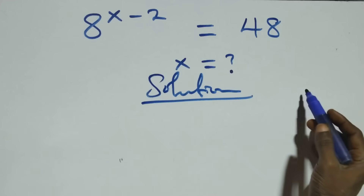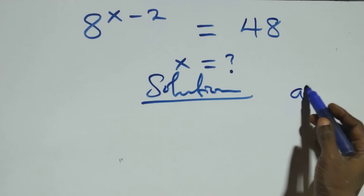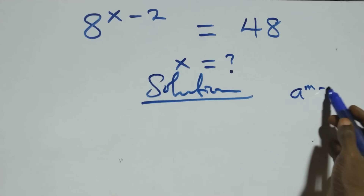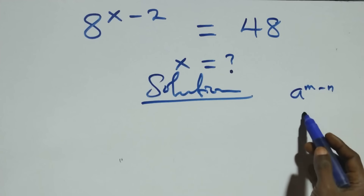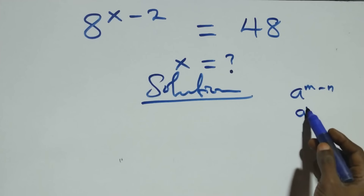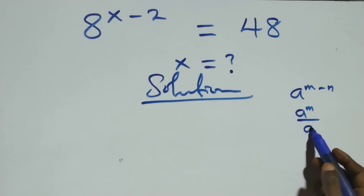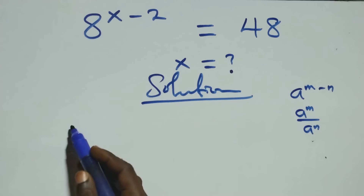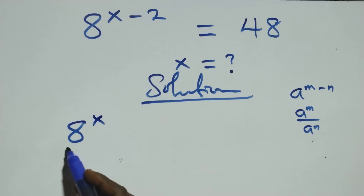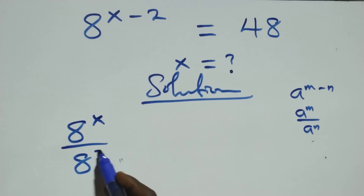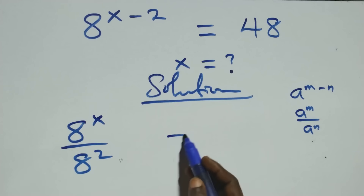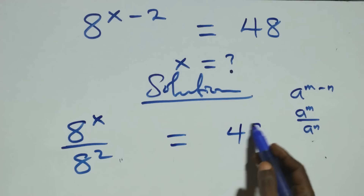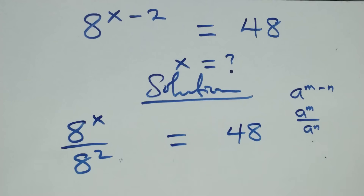This follows when we have a raised to power n minus n, which is the same thing as a raised to power n over a raised to power n. At this point here, we have 8 raised to power x over 8 squared equals 48 on this side.